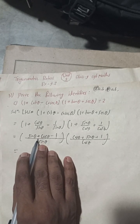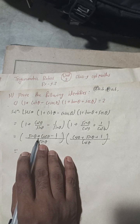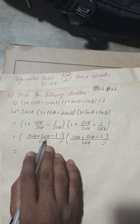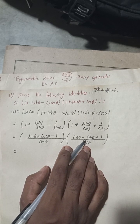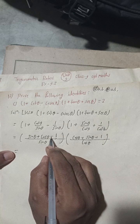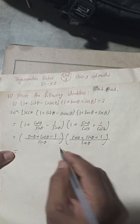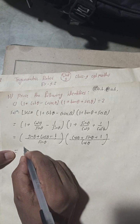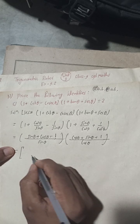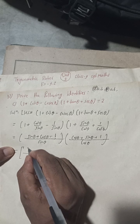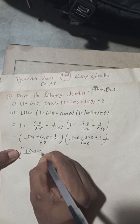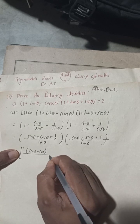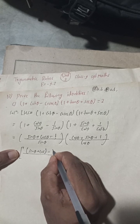Now we can see that the numerator of the first bracket is (sin θ + cos θ − 1), and the numerator of the second bracket is (sin θ + cos θ + 1). Let me write this clearly: the first bracket becomes (sin θ + cos θ) minus 1.